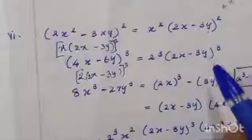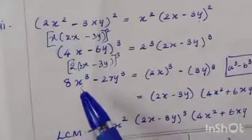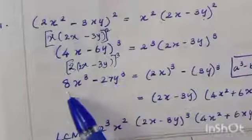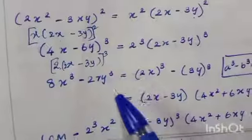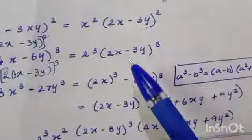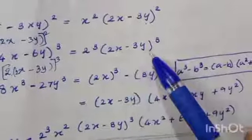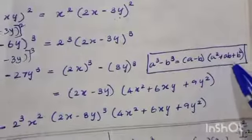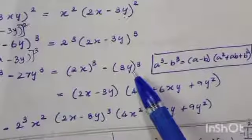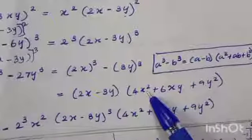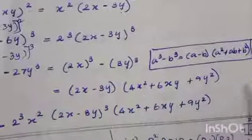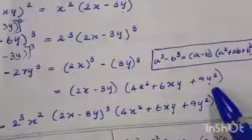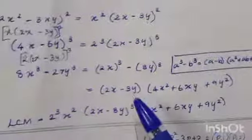For 8x³-27y³: rewrite as (2x)³-(3y)³. Apply the identity a³-b³ = (a-b)(a²+ab+b²), giving (2x-3y)(4x²+6xy+9y²).